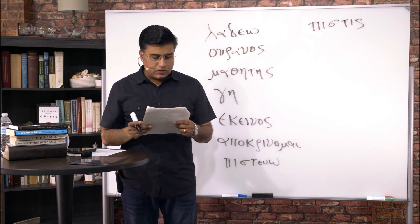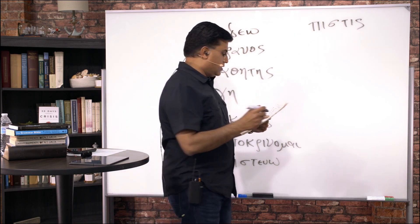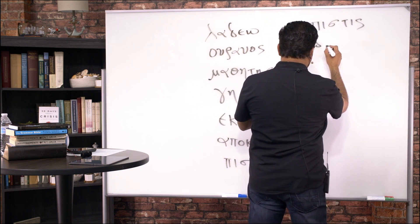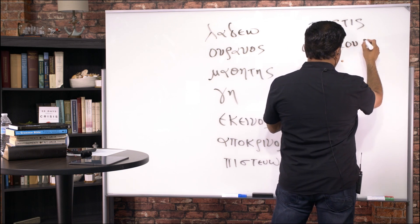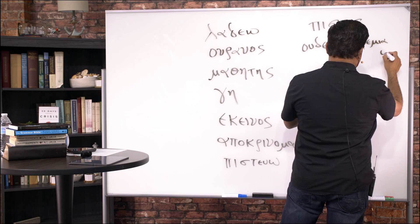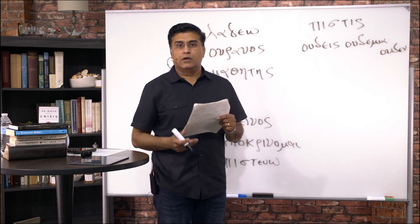Udes, Udemia, Uden. No one. Udes, Udemia, Uden. No one. Upo. Again, the U is the negating word. Udes, Udemia, Uden. No one.